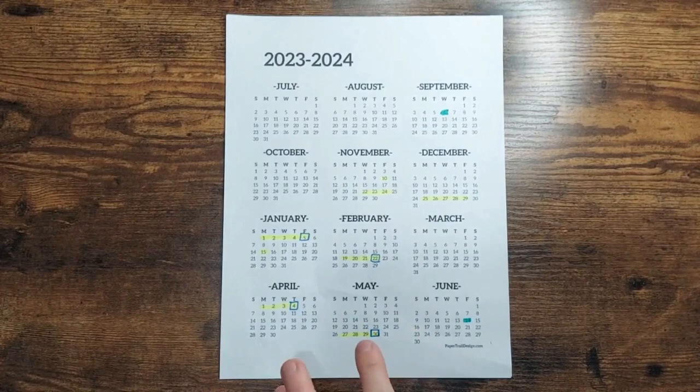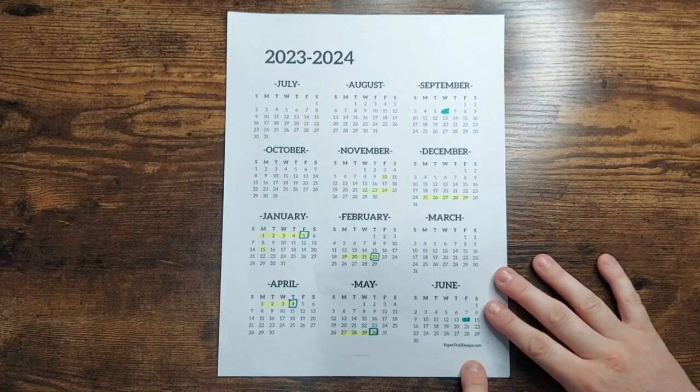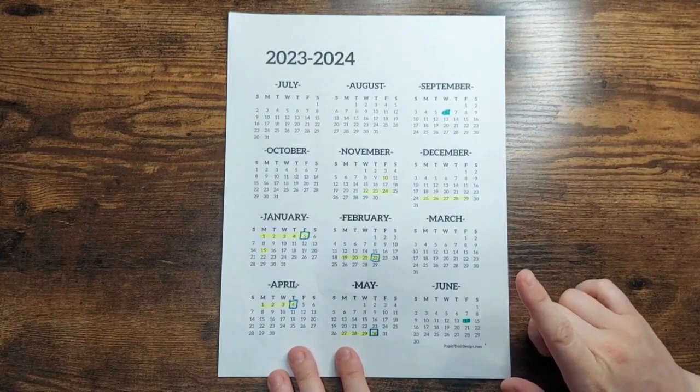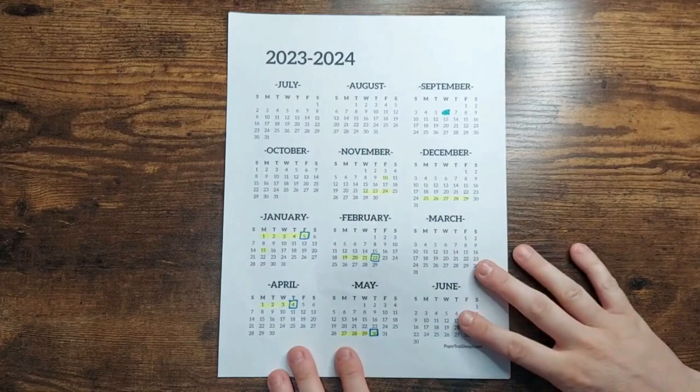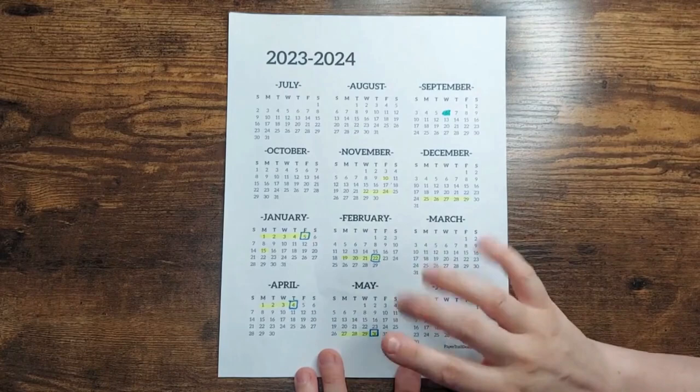So first I start with a calendar. I just googled a school year calendar and there's lots of free ones online. You don't need anything fancy. It was from papertraildesign.com, it was free. I started by marking my start date and our end date for school and then I marked all the holidays that we have. So we are in a distance learning program which pays for homeschool. This year they're having half days at the end of some breaks for some reason. So that's what these squares are.